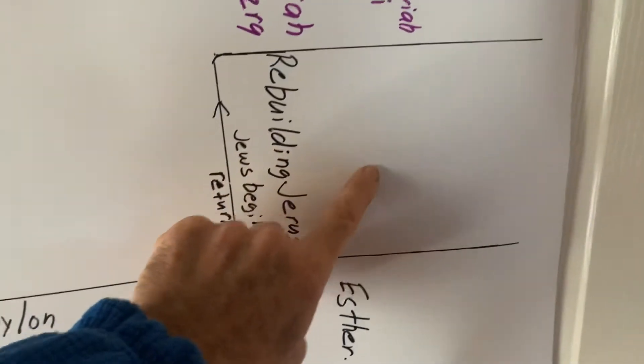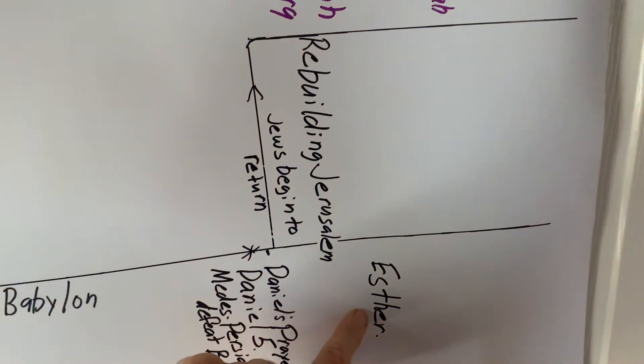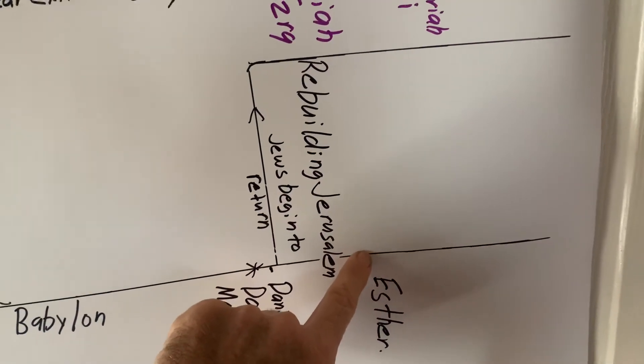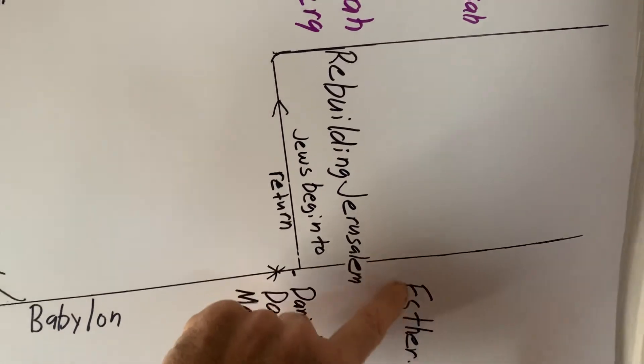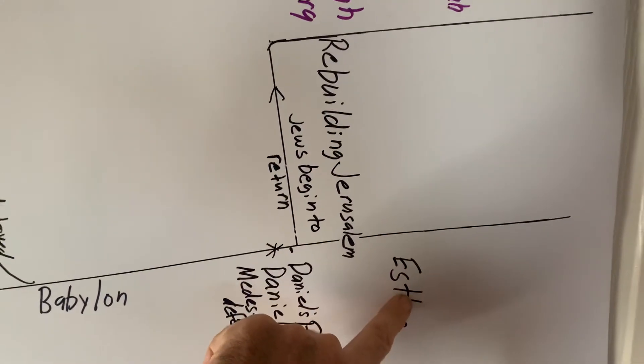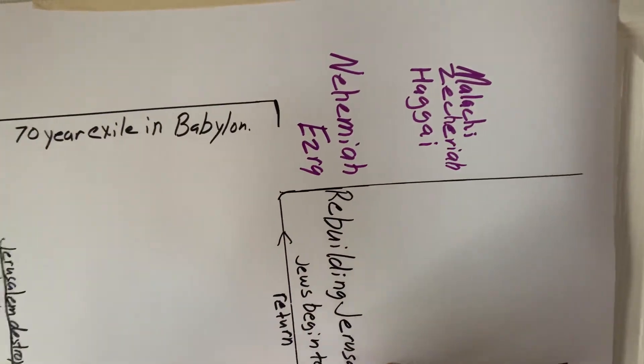And then over here, you have the book of Esther in this land that was called Assyria and was called Babylon. It's now called Persia, where some Jews opt not to come home and they remain in the Persian Empire.